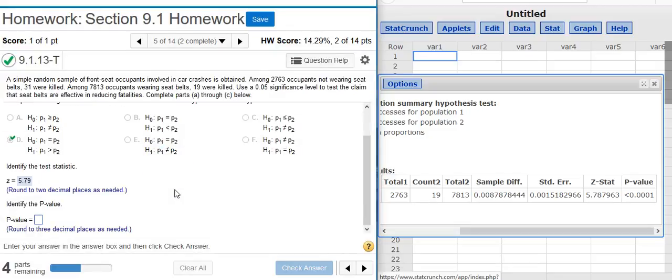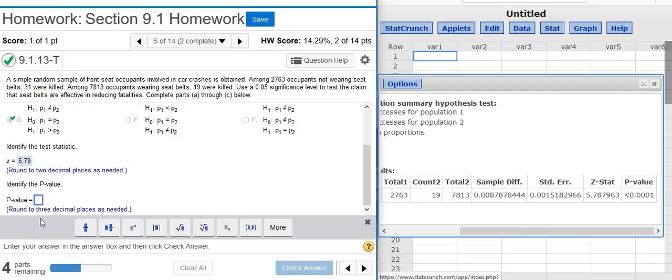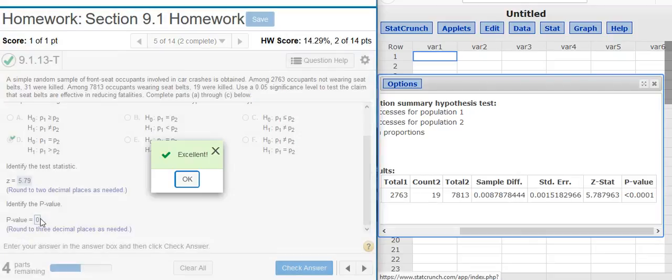Now I'm asked for the P-value. P-value is right next door, the last number listed in the column. Notice when we have this less than 0.0001 listed here, that's practically 0. So I can just put 0 in here. Excellent!